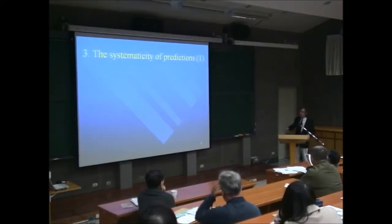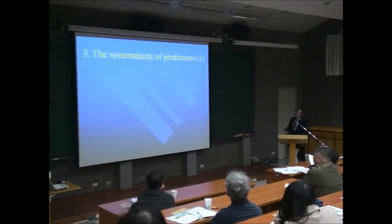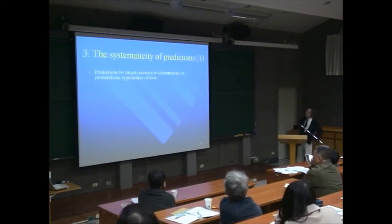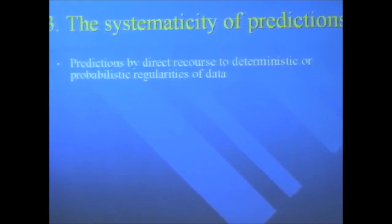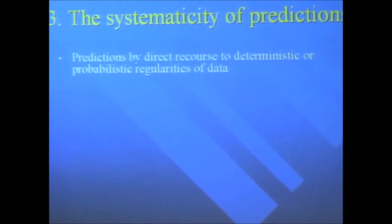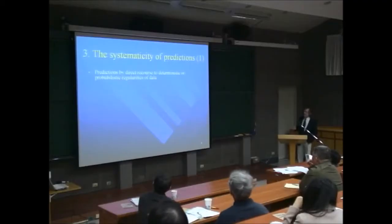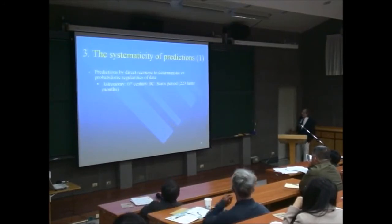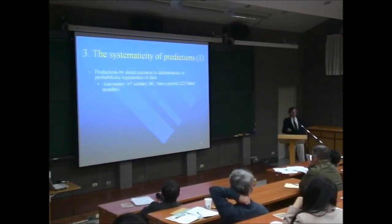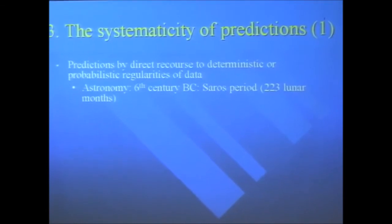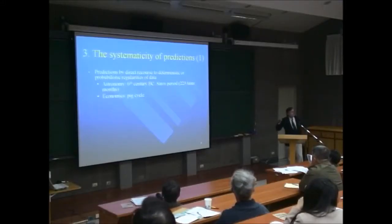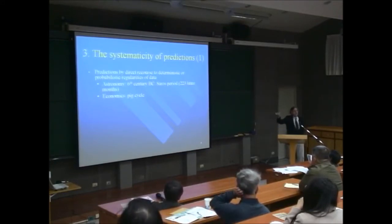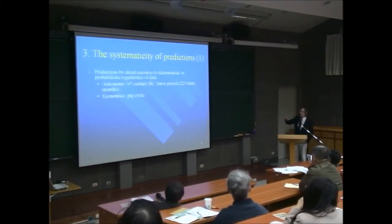There are many different types of predictions. Predictions by direct recourse to deterministic or probabilistic regularities of data: for instance, already in the 6th century BC, the Saros period of 223 lunar months allowed very good prediction of lunar and solar eclipses. In economics, the so-called pig cycle can be used to predict the price of pork — it's more complicated than the standard story. There are also predictions based on correlations with other data sets.